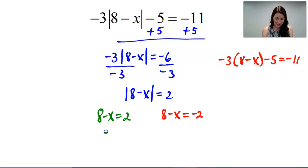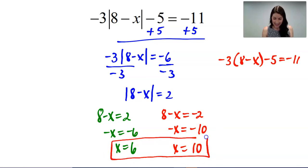Let's go ahead and solve both of these. I'm going to subtract 8 and then divide by negative 1. Likewise, subtract 8 and divide by negative 1. And I get 6 and 10 as my solutions. Once again, you can always double check those answers into the original equation.